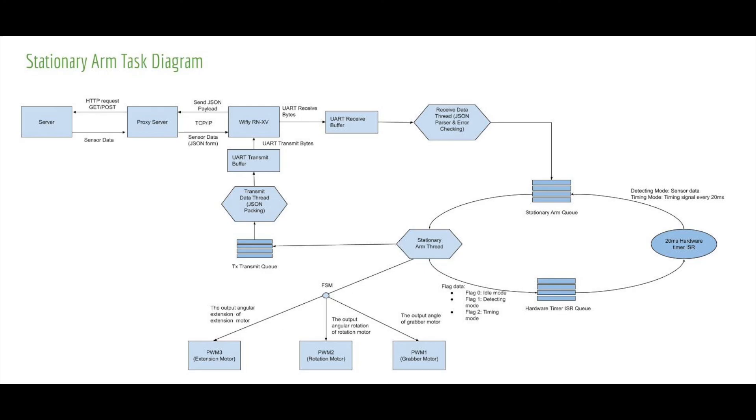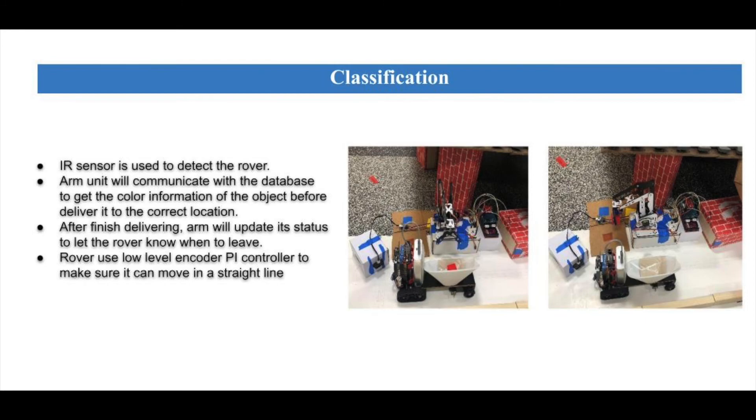Finally, with all the technical details out of the way, let's see what the arm can do with them to complete its task of classification. First, the IR sensor is used to detect the rover. The arm unit will communicate with the database to get the color information of the object before delivering it to the correct location. After finishing delivery, the arm can update its status to let the rover know when to leave. The rover uses a low-level encoder PI controller to make sure that it can move in a straight line, and the object has been correctly classified.